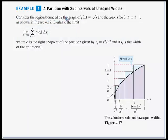Consider the region bounded by the graph of the square root of x and the x-axis for x values between 0 and 1, starting at the origin and going as far as x equals 1, as shown in the figure. We're going to evaluate the limit of the summation from i equals 1 to n, letting n go to infinity, of the function times delta x sub i, where c sub i is the right endpoint given by i squared over n squared, and delta x is the width of the i-th interval.